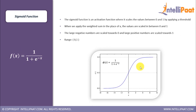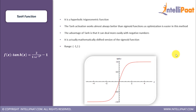The sigmoid function is denoted by 1 / (1 + e^(−x)). It scales values between zero and one — large negative inputs are scaled toward zero and large positive inputs are scaled toward one. Then we have the tanh function, a hyperbolic trigonometric function that scales values between minus one and one. One advantage of tanh over sigmoid is that it can deal more easily with negative numbers.